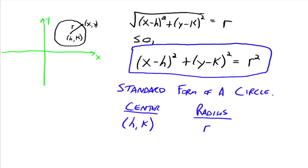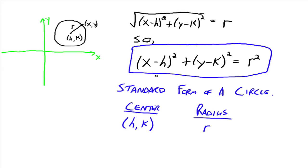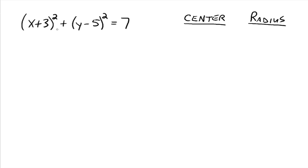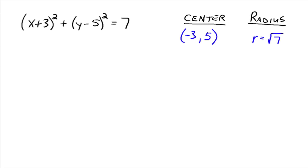For example, say we've got (x plus 3) squared plus (y minus 5) squared equals 7. We're in standard form, so we can read off the center right away. Remember, our form is (x minus h) squared plus (y minus k) squared — those minus signs are built into the formula. So when you see x plus 3, that's really x minus negative 3. Your h would be negative 3 and your k would be 5, so the center would be (negative 3, 5). The radius would be r equals the square root of 7, because the formula had everything equal to r squared, so r is the square root of that side.